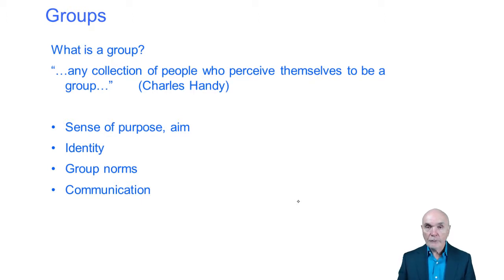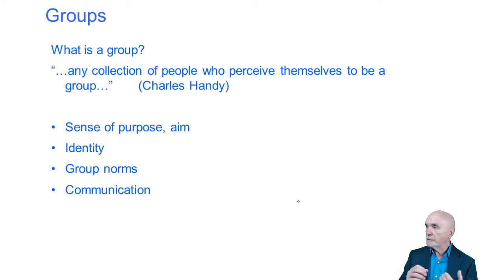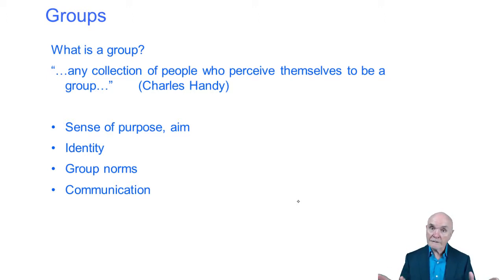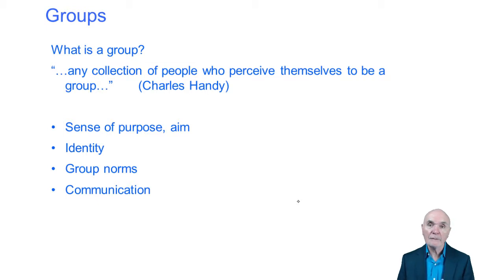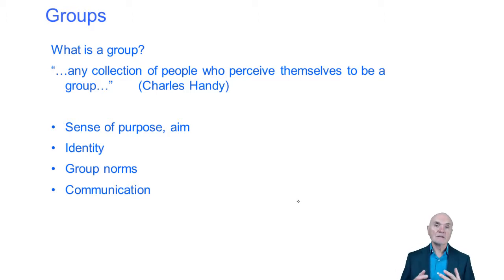The characteristics of a group, whether formal or informal: it will have a sense of purpose or aim — to implement the new IT system, to prevent redundancies, to try to increase pay, whatever the group sees its aim as. It has an identity — we know who's in the group and who's outside the group. There are group norms, which are accepted ways for group members to perform, and you have to comply with these if you want to be accepted. If you depart from group norms, you're liable to be expelled. And there is communication within the group — they have to talk to each other to keep their sense of purpose, decide on group norms, and plan how they're going to achieve their aim.